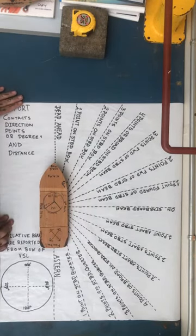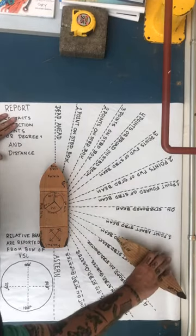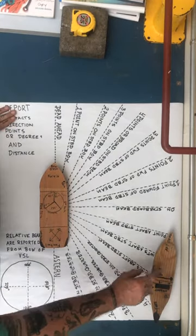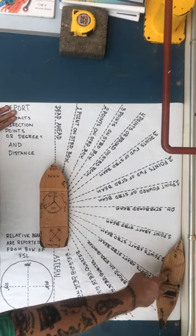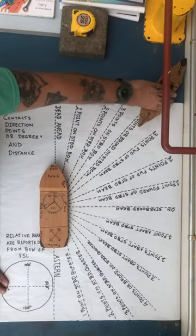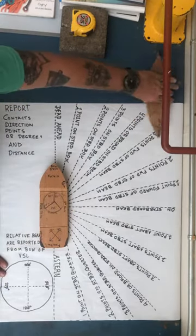So if I have a vessel over here, right, depending on how far that vessel is, I may report him to be two points abaft of the starboard beam. Okay? Or if I have a vessel over here, I have a vessel four points or broad on the starboard beam. Okay? And depending on which direction he's headed, that will help the captain assess what he needs.